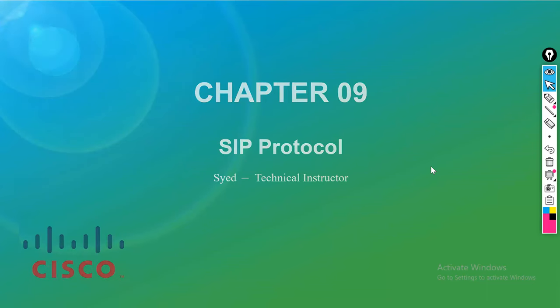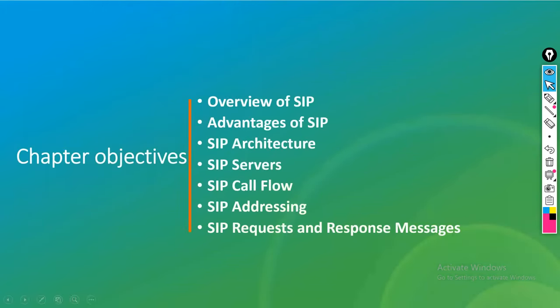Minimum two classes are required. The chapter objectives include: an overview of the SIP protocol, advantages of this architecture, types of SIP servers, call flows — unlike MGCP which has only one control, SIP has multiple call flows — SIP addressing, request and response messages, and the configuration part.